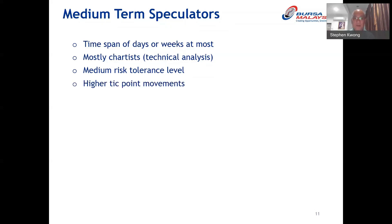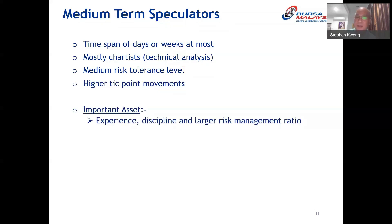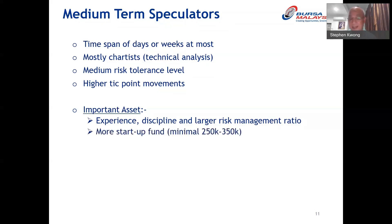The risk tolerance level is medium here compared to scalpers, which is low. That means medium-term speculators have a higher tolerance level and allow for higher tick-point movement range. Scalpers take profit at 8 to 12 points and cut loss at 3 to 5 points; medium-term speculators allow much bigger movement or range. Their startup capital is much higher than a scalper — you'll need a range of around 250,000 to 350,000 ringgit to become a medium-term speculator.